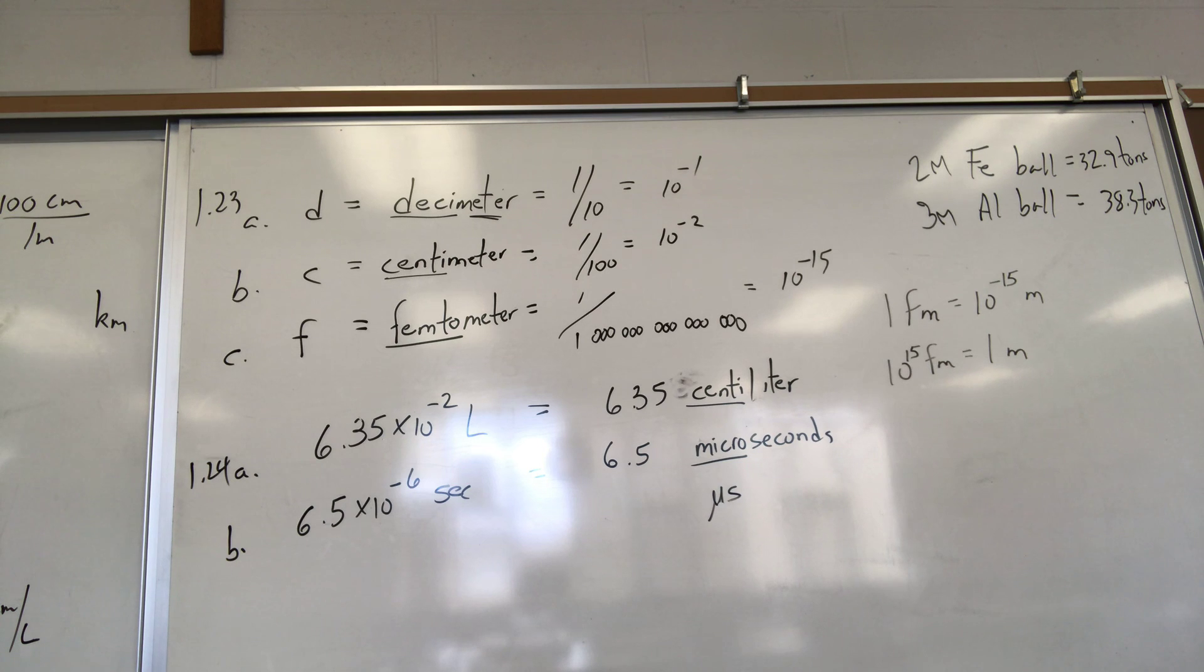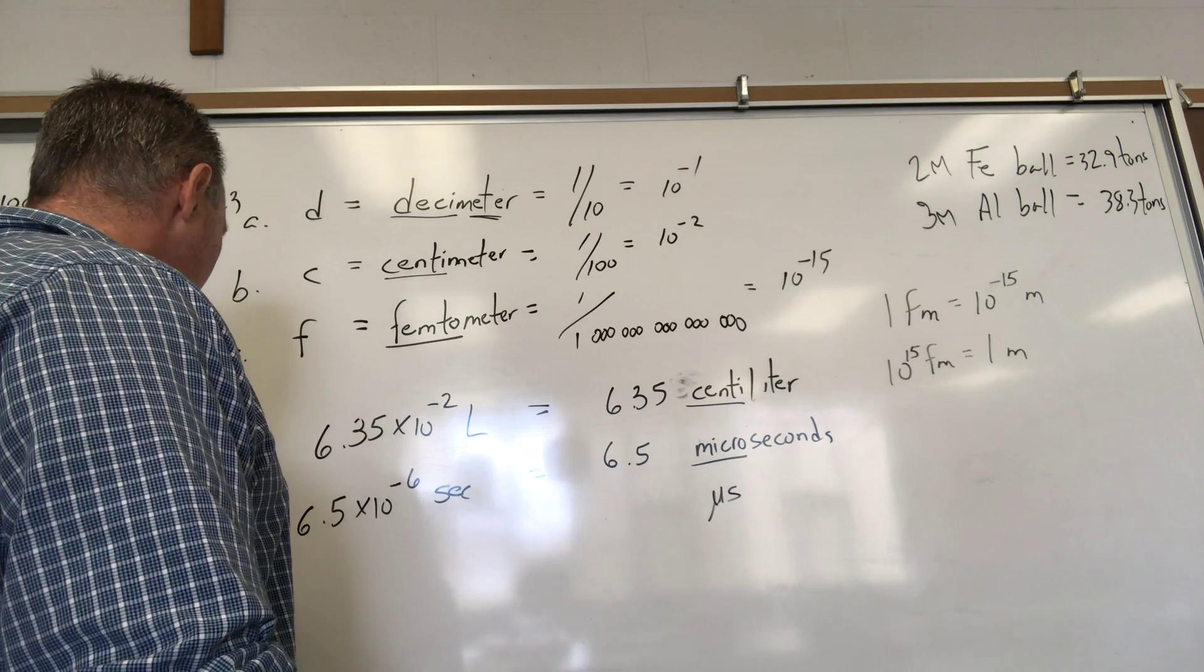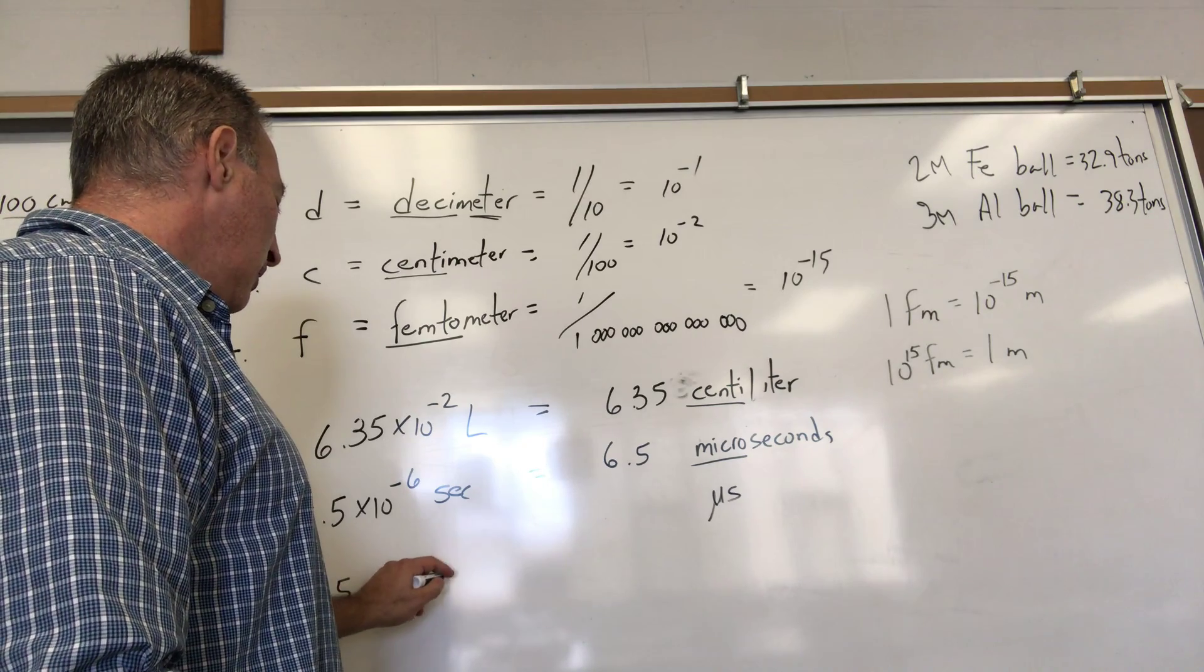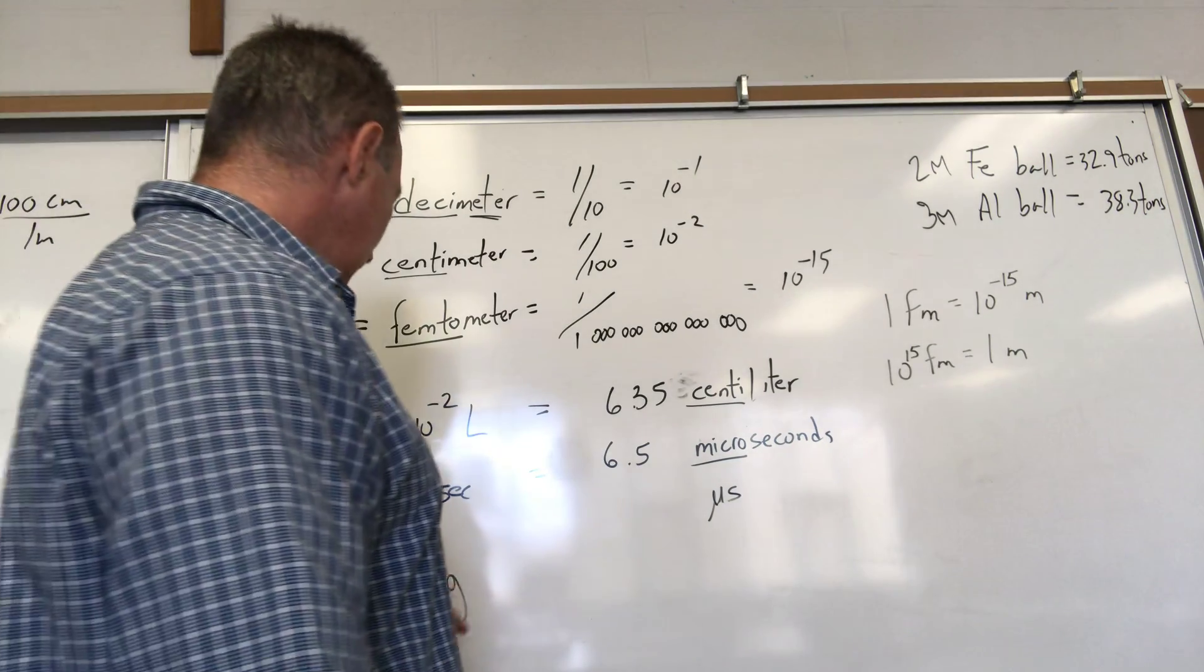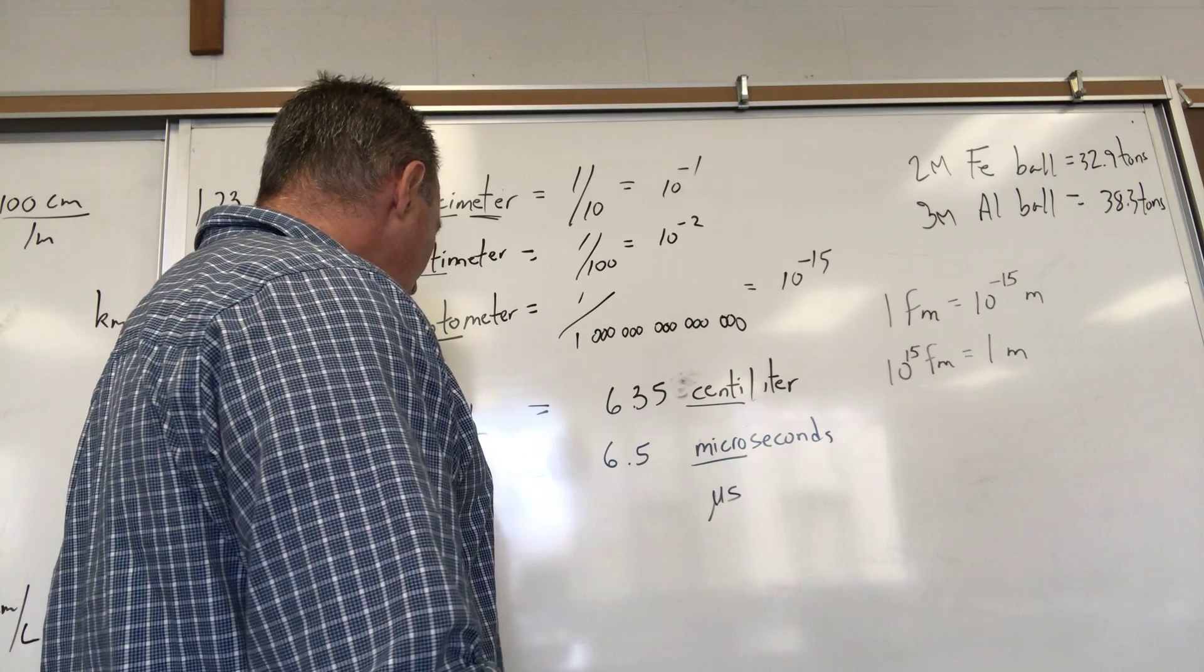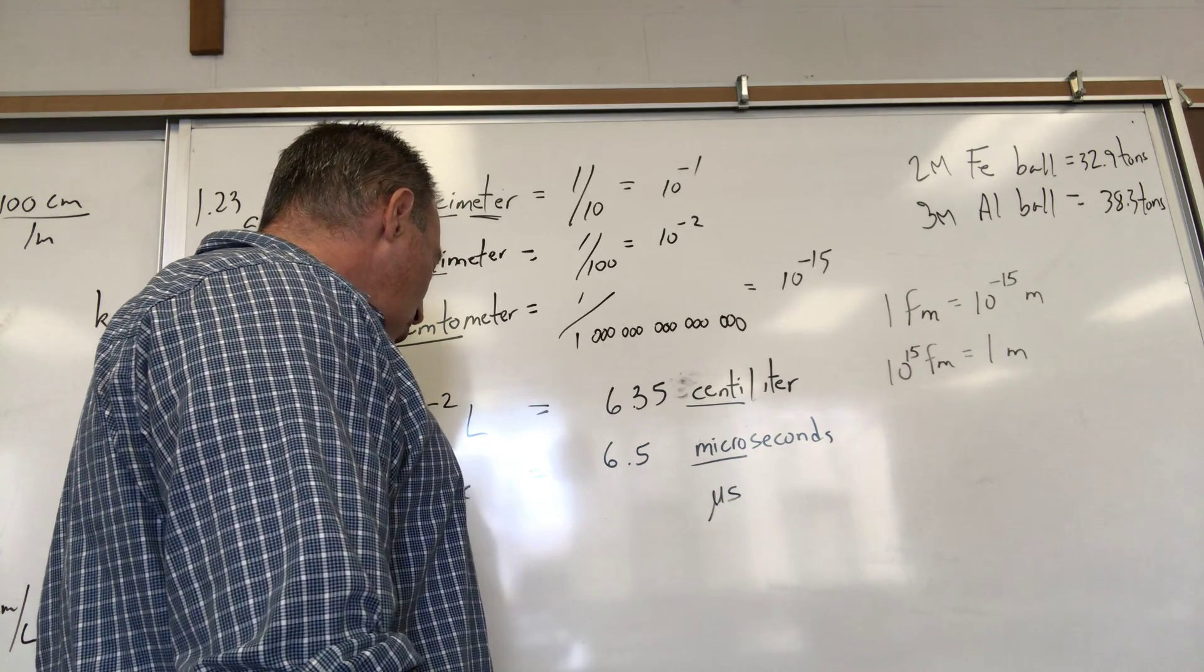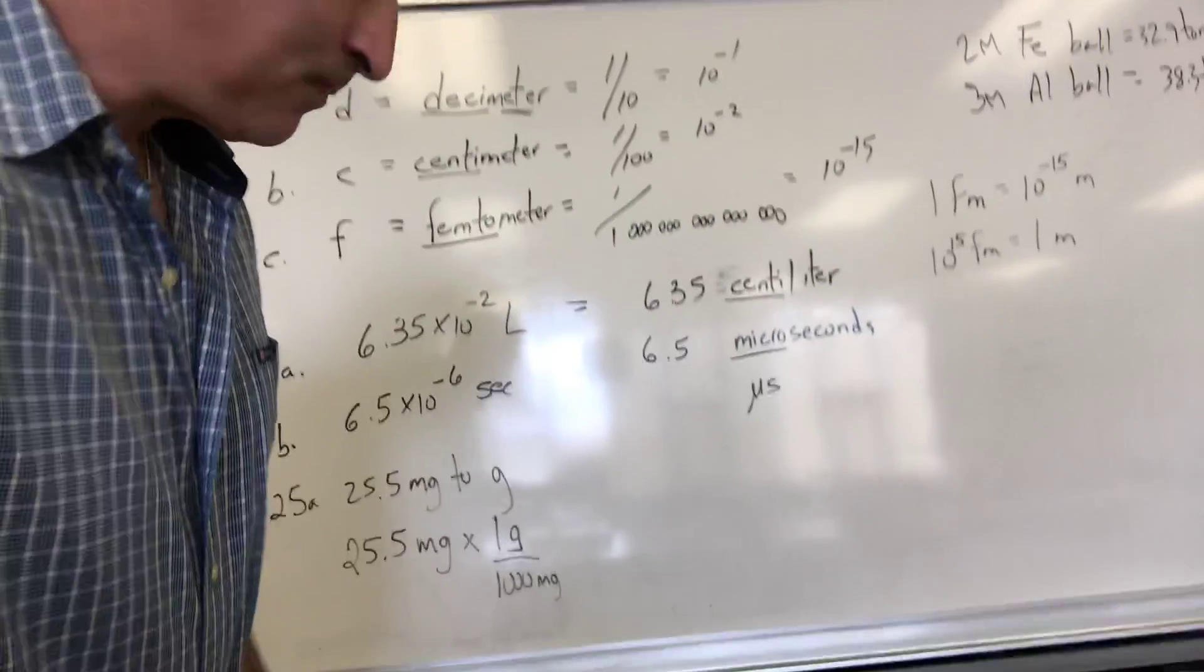Let's do one example from 25. 25a asks perform the following conversion: 25.5 milligrams to grams. You have to know that the conversion factor from milligrams to grams is a thousand to one. There's one gram for every one thousand milligrams.